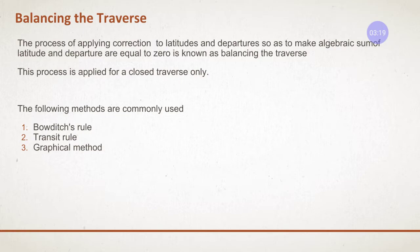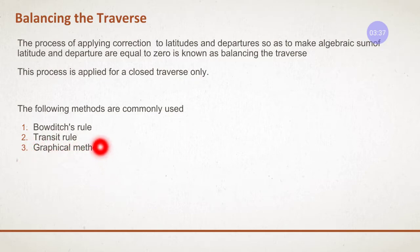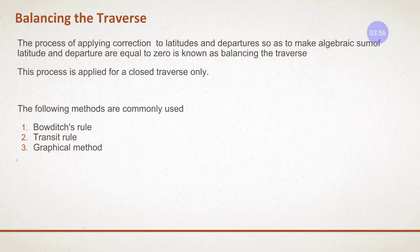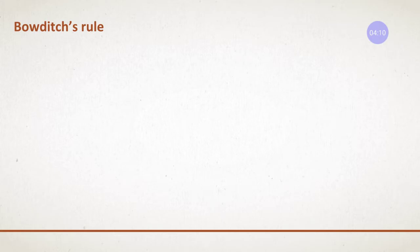The following methods are used for balancing of traverses: the first one is the Bowditch rule, the second is the transit rule, and the third is the graphical method. In this lecture you are going to study about the Bowditch rule — what the Bowditch rule is, what its formulas are — and you will do the problems in the coming lectures. The Bowditch rule is also known as the compass rule.